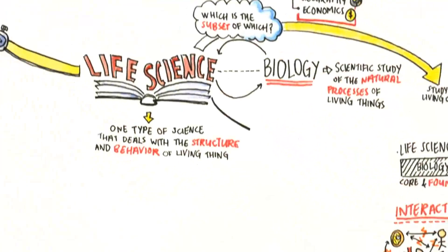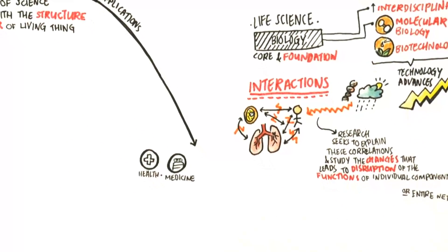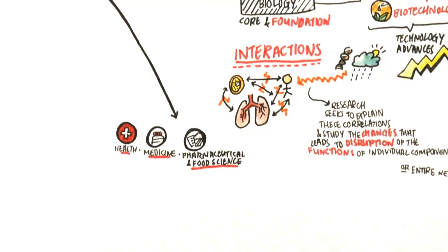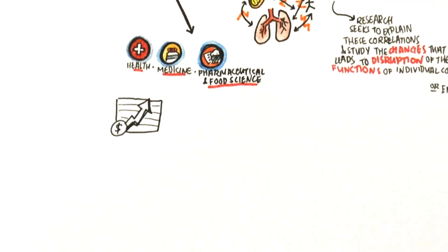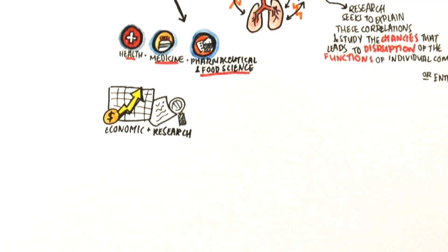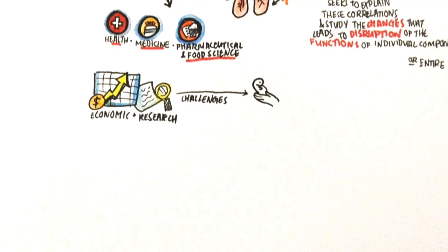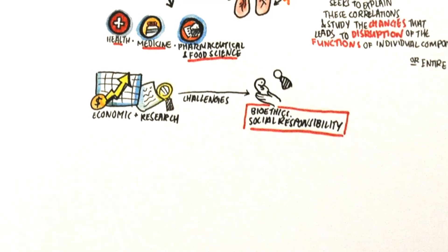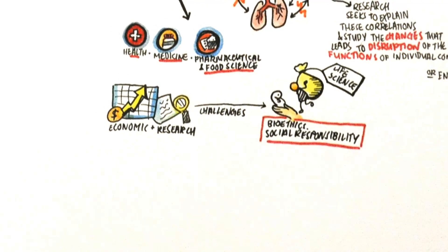Research in life sciences seeks to explain these correlations and study the changes that lead to disruption of the functions of individual components or entire networks. Hence, life sciences have applications in health, medicine, pharmaceutical and food sciences industries. This change in economic development and research presented new challenges in the field of bioethics and greater social responsibility among stakeholders.